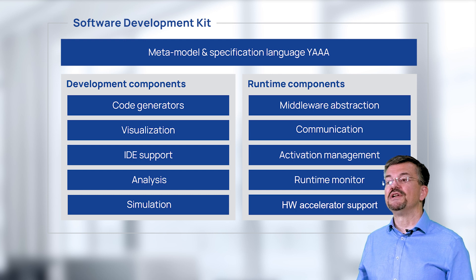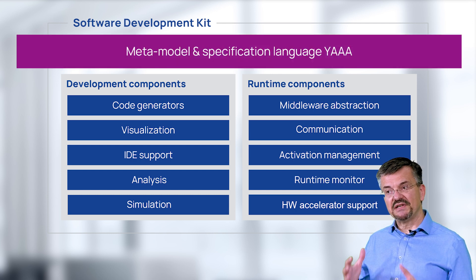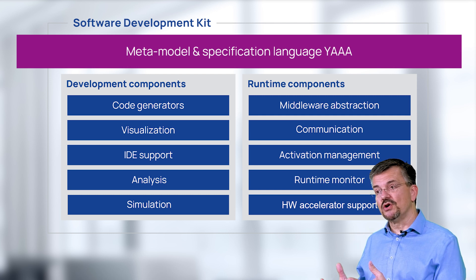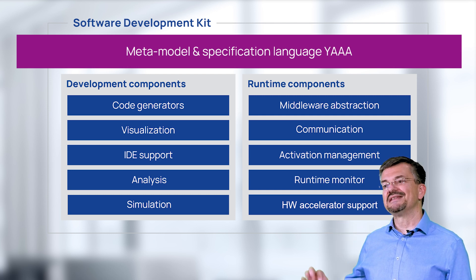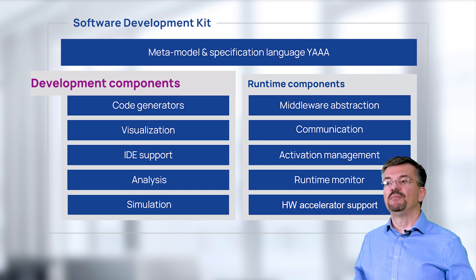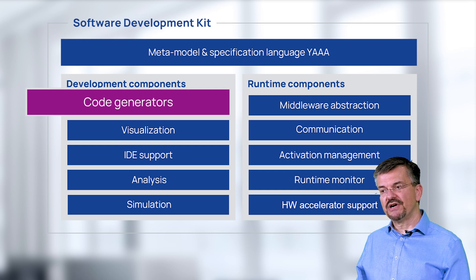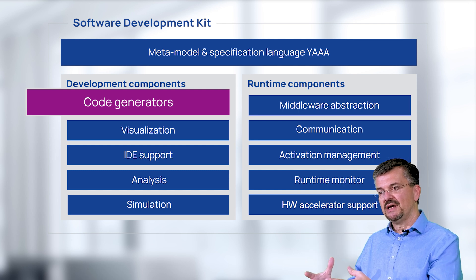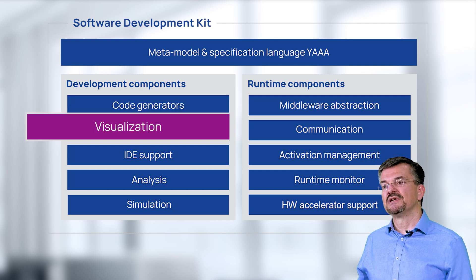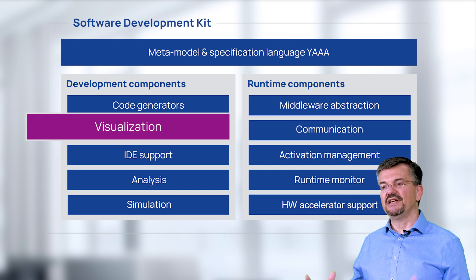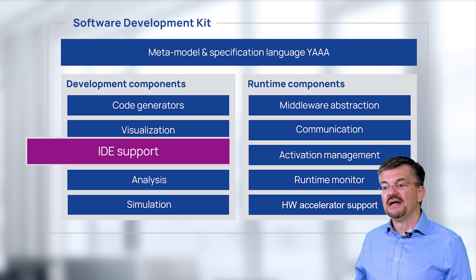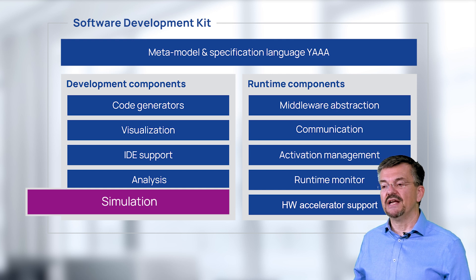The first and probably most important component is a specification language. With that specification language, you can specify your functional components, specify the input and output of each component, and specify how the components are connected to each other. Second, you have a number of development tools which help you to develop your system. We have code generation tools that take the specification and generate C++ code from it. We have visualization tools which allow you to analyze a graphical representation of your system, IDE support, different analysis tools, and tools which support the simulation of your system.